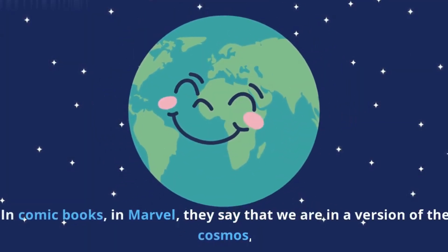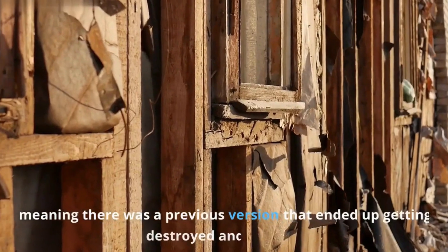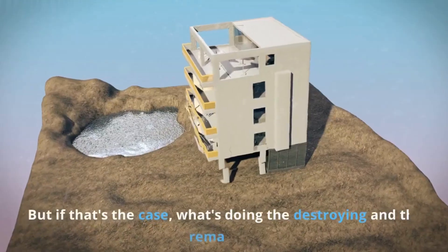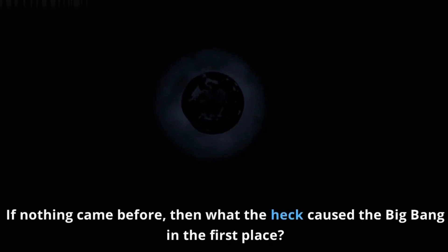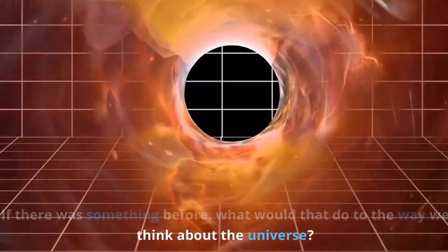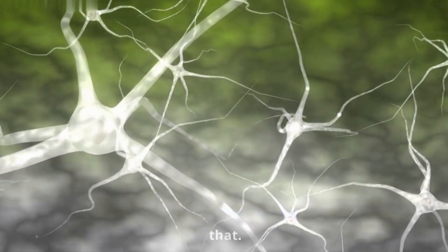In comic books, in Marvel, they say that we are in a version of the cosmos, meaning there was a previous version that ended up getting destroyed and remade. But if that's the case, what's doing the destroying and the remaking? If nothing came before, then what the heck caused the Big Bang in the first place? If there was something before, what would that do to the way we think about the universe? And if something is responsible for it all, I don't know if our tiny little human brains could actually handle that.